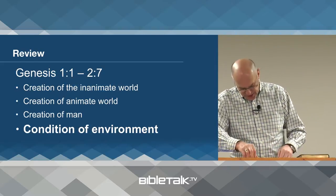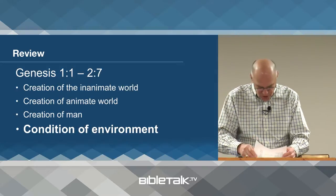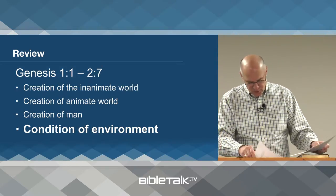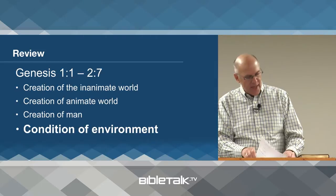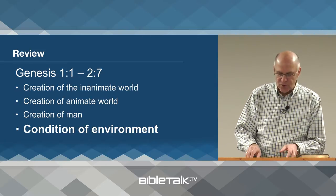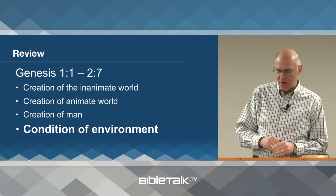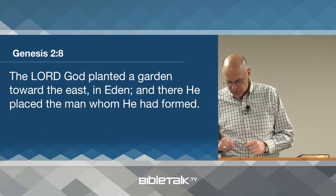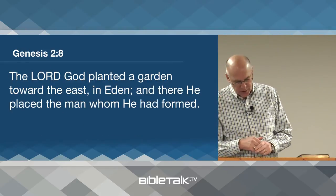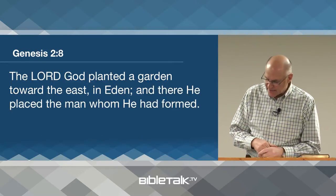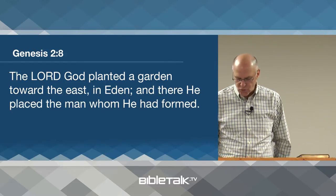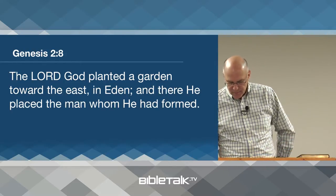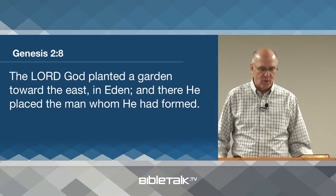In the next section, he's going to begin describing the location where Adam lived, the establishment of the principle of law, and man's first interaction with his environment. Let's go to Genesis chapter 2, verse 8: 'The Lord God planted a garden toward the east in Eden, and there He placed the man whom He had formed.'